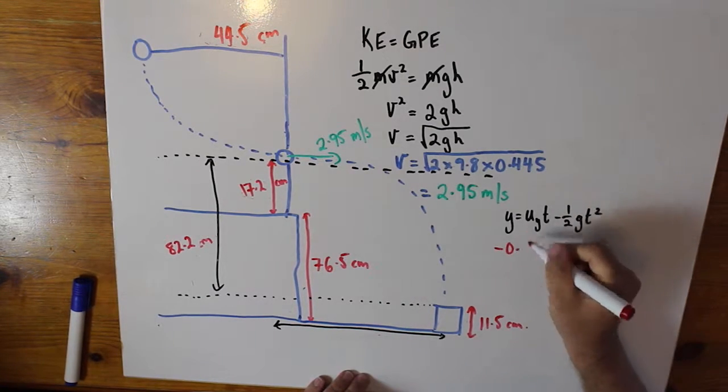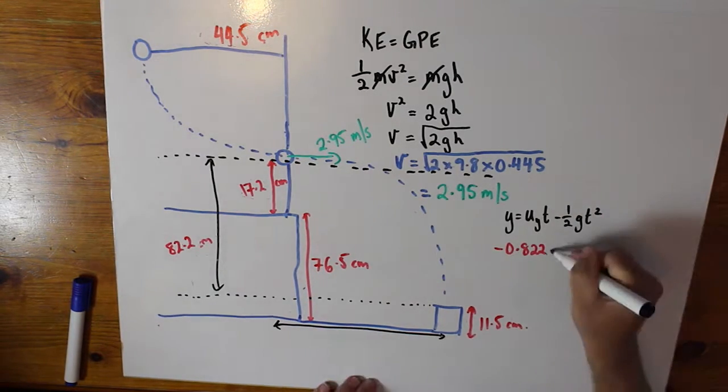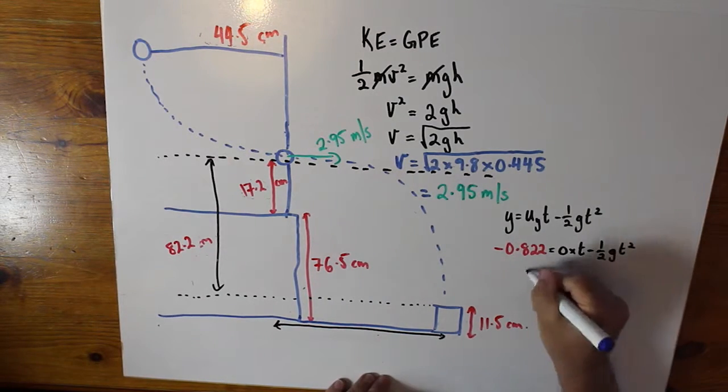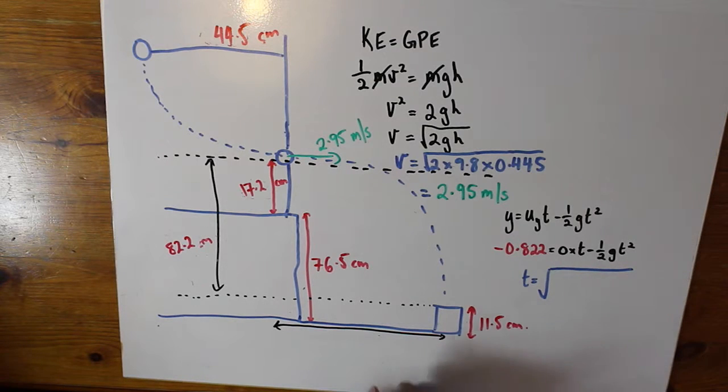Then use your vertical position formula to find the time it takes for the ball to fall the required height. Then use the horizontal position formula to find the correct distance to place the cup.